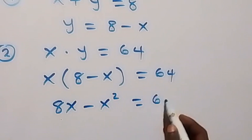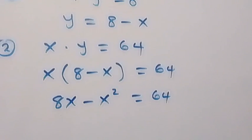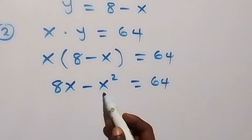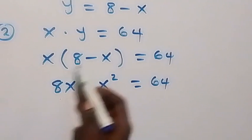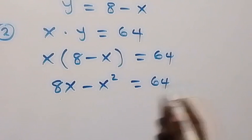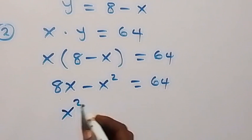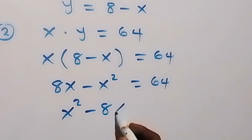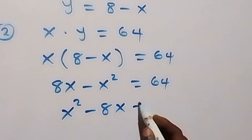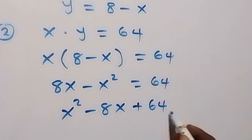Let's open this bracket: that gives us 8x minus x squared equals to 64. From here we rearrange to form a quadratic equation. Taking everything to one side, minus becomes plus, so we have x squared minus 8x plus 64 equals to 0.